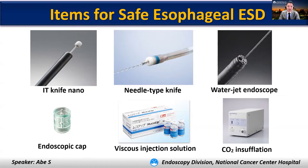We normally use both an IT knife and needle-type device such as the dual knife. A therapeutic endoscope with water jet function is essential to inject into the submucosal space and identify the bleeding source in case of intraoperative bleeding. An endoscopic cap is a must-have item to get a stable scope position and smoothly enter the submucosal space.